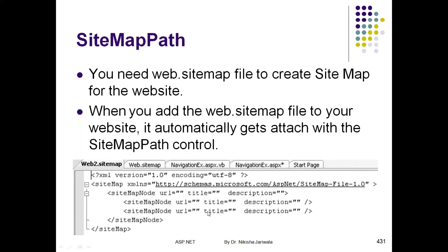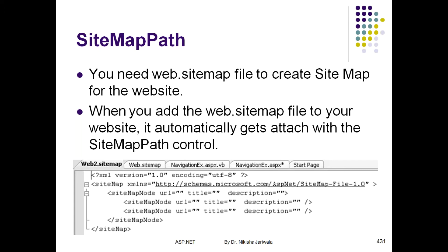If you want to add the web.sitemap file to your website, right-click on the website within Solution Explorer. Select 'Add New Item' and a dialog box will appear with many templates. You will select the sitemap file. By default, it will be named web.sitemap — you will not change this name. I repeat — this web.sitemap file you will not change, because the SiteMapPath control will automatically detect the web.sitemap file and work on it.